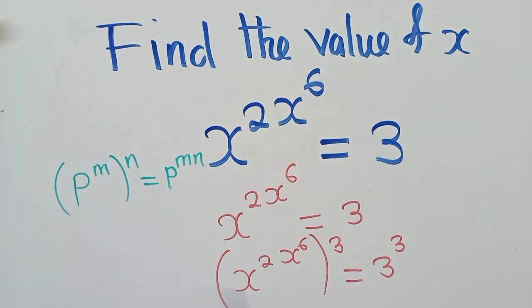So this applies to what we have. So we have this power all of it up to here. So this power, which is 2x power 6, will be multiplied by 3.